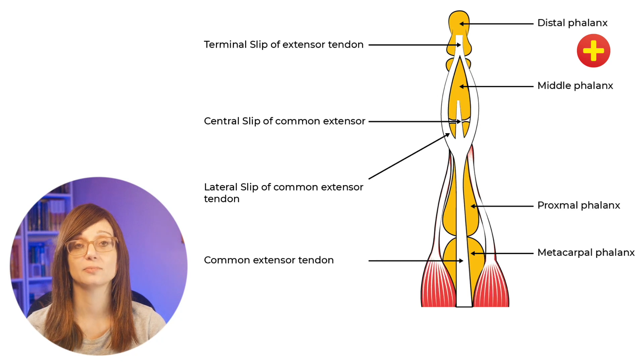So first off, the anatomy. Distal to the MCPJ, the common extensor tendon divides into three slips. There's one central band and there's two lateral bands.